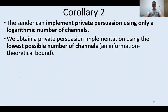Continuing in a similar flavor, we can deduce from our main result that the sender can implement private persuasion using a number of channels that is only logarithmic in the number of receivers, which is an exponential improvement upon the naive implementation using a separate channel for each receiver. Moreover, this construction matches the information-theoretic lower bound on the number of channels required to implement private persuasion, regardless of utility functions and prior distribution.